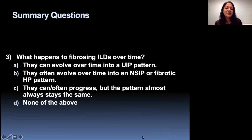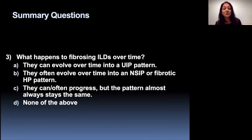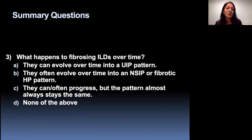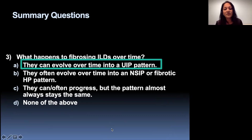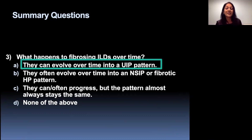What happens to fibrosing ILDs over time? They can evolve over time into a UIP pattern. The answer is that they can evolve over time into a UIP pattern — as discussed in the Silva paper from 2008, in which 28% of patients progressed into a pattern indistinguishable from UIP.